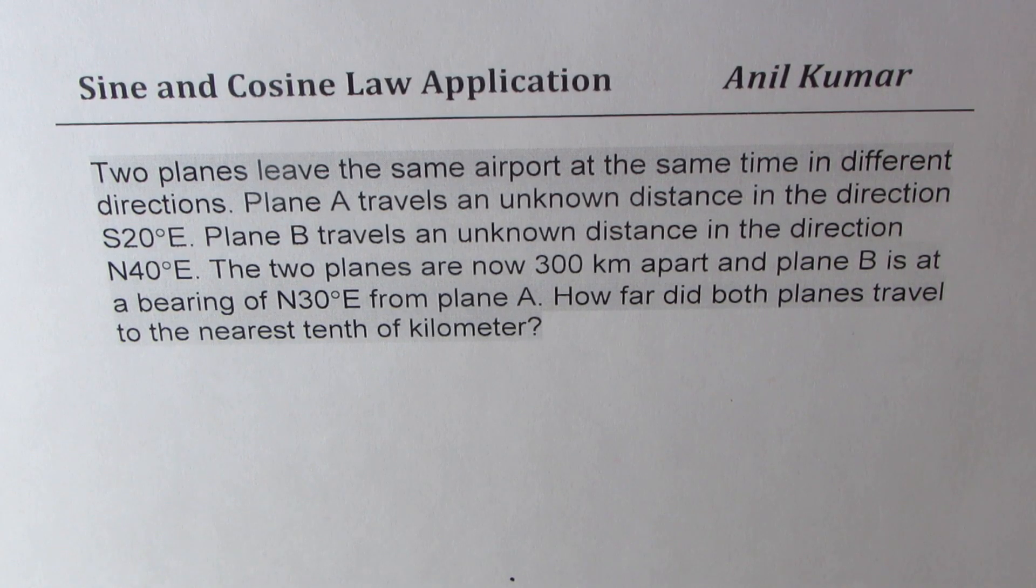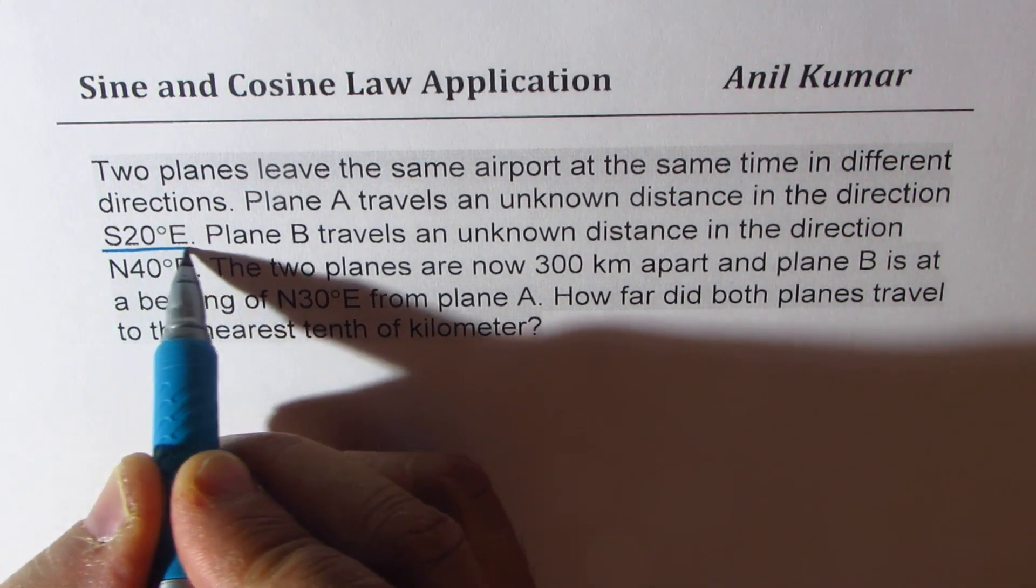Now let's see how to solve this question which is based on sine and cosine law. Two planes leave the same airport at the same time in different directions. Plane A travels an unknown distance in the direction of south 20 degrees east.